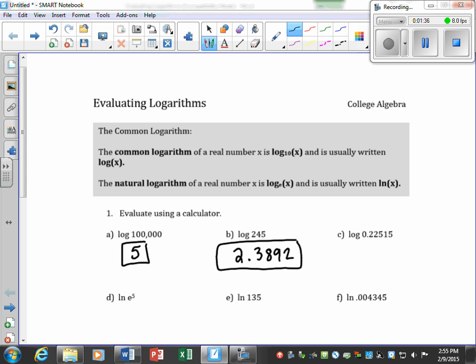For part c, once again, if there's not a base showing, there's a known base 10, so we can put it in the calculator. Log of this value, hit enter, and I get negative 0.6475.